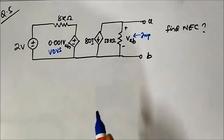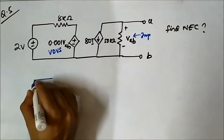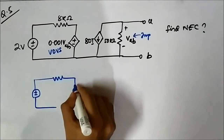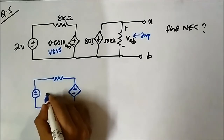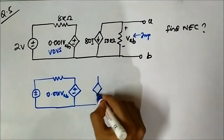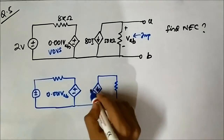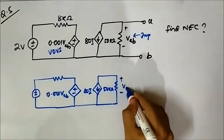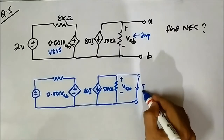First we have to determine the Norton current. For that, we have to short-circuit terminals A and B and redraw the circuit. This is 50 kilo-ohm minus VAB, and this is the two terminals A and B short-circuited.